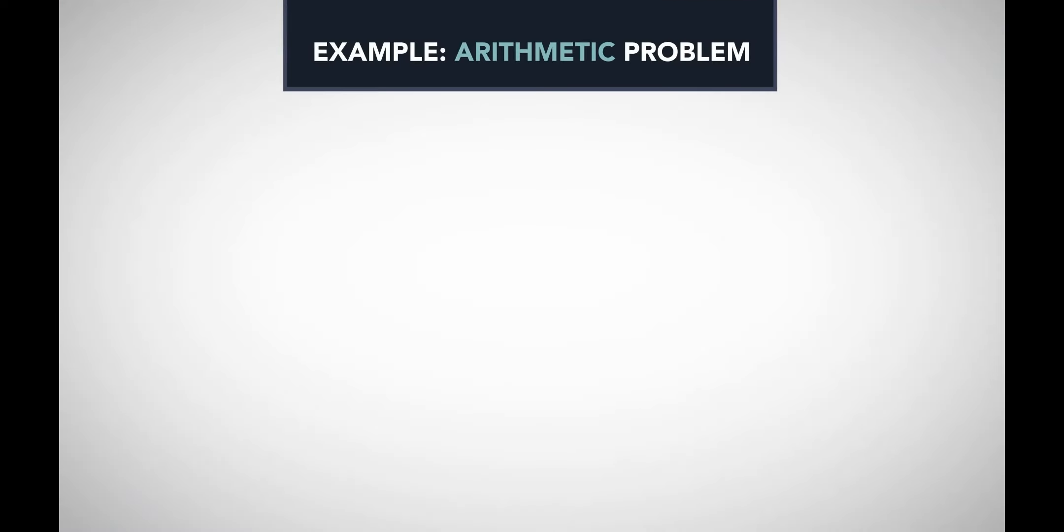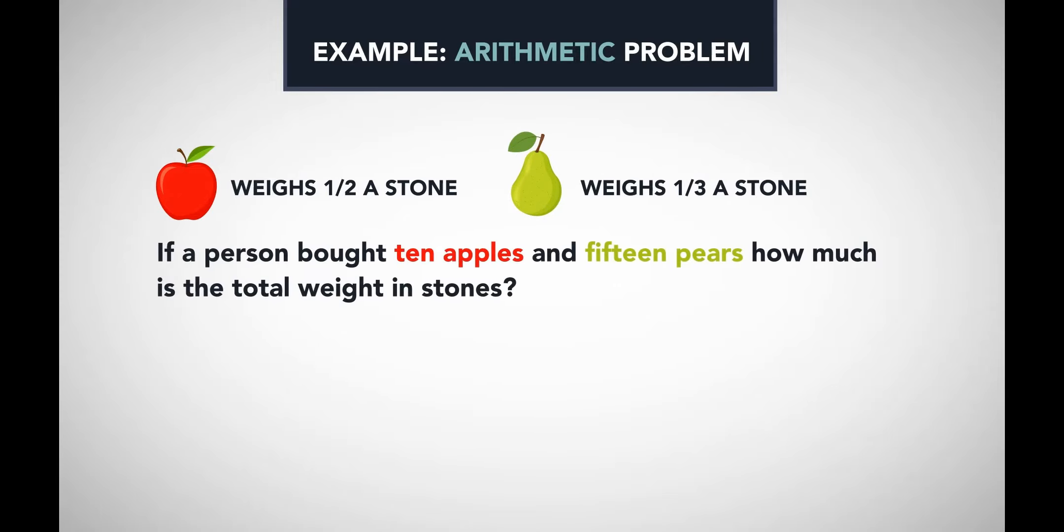An arithmetic problem involving scales can be the following problem. Say an apple weighs half a stone and a pear weighs one-third of a stone. If a person bought ten apples and fifteen pears, how much is the total weight?